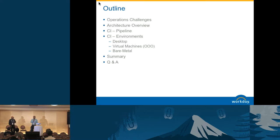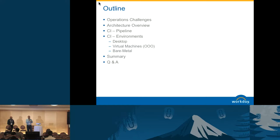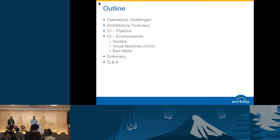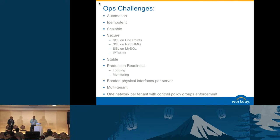We are taking this journey into providing OpenStack to have a more elastic system for deploying all these applications on our premises. We're going to talk about our operations challenges, show you our architecture, talk about specifically the CI pipeline, the environments that we create for our development and deployment teams, key takeaways, and we'll also show you the live CI system back in our data centers in Portland if connectivity is good.